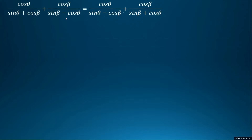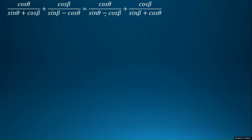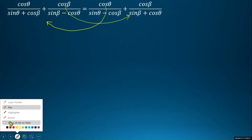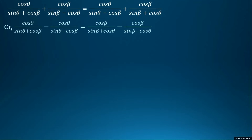To solve this equation, we will take the terms with cos θ in the numerator to one side, and write the terms with cos θ in the numerator on the other side. We will transpose the terms — taking terms with cos θ in the numerator to the left hand side and terms with cos θ in the numerator to the right hand side.